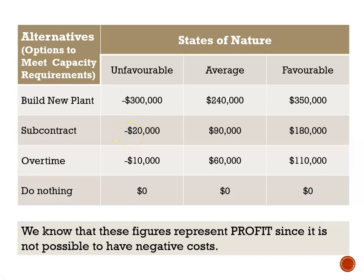If we choose to subcontract and conditions turn out to be average, then we'll gain a profit of $90,000. For overtime: unfavorable conditions, we'll lose $10,000; average conditions, profit of $60,000; and favorable conditions, profit of $110,000.